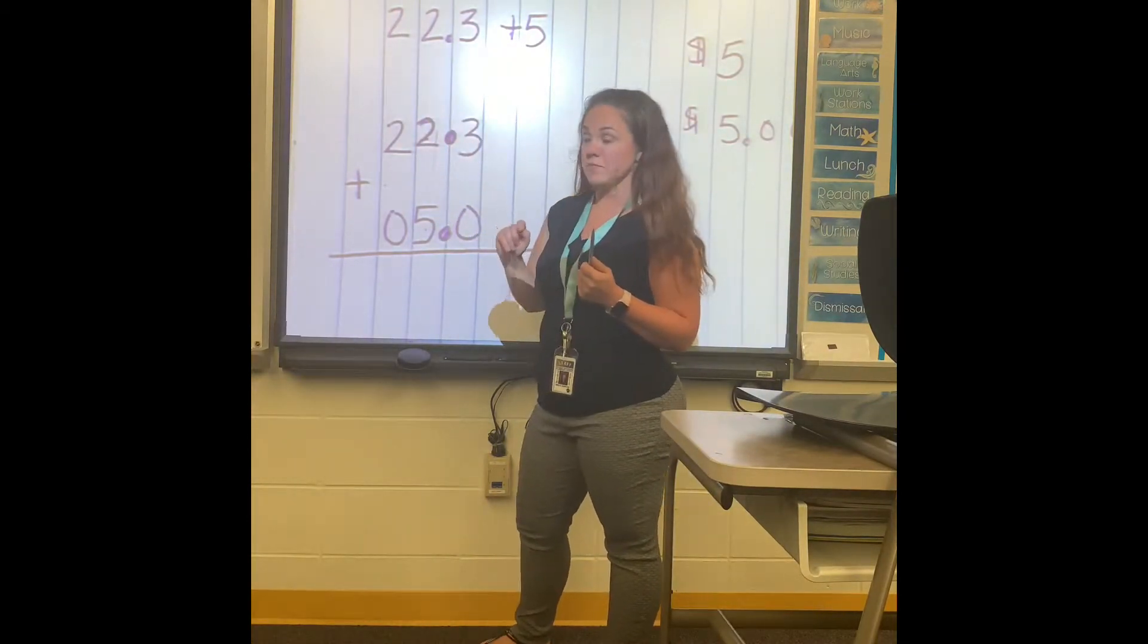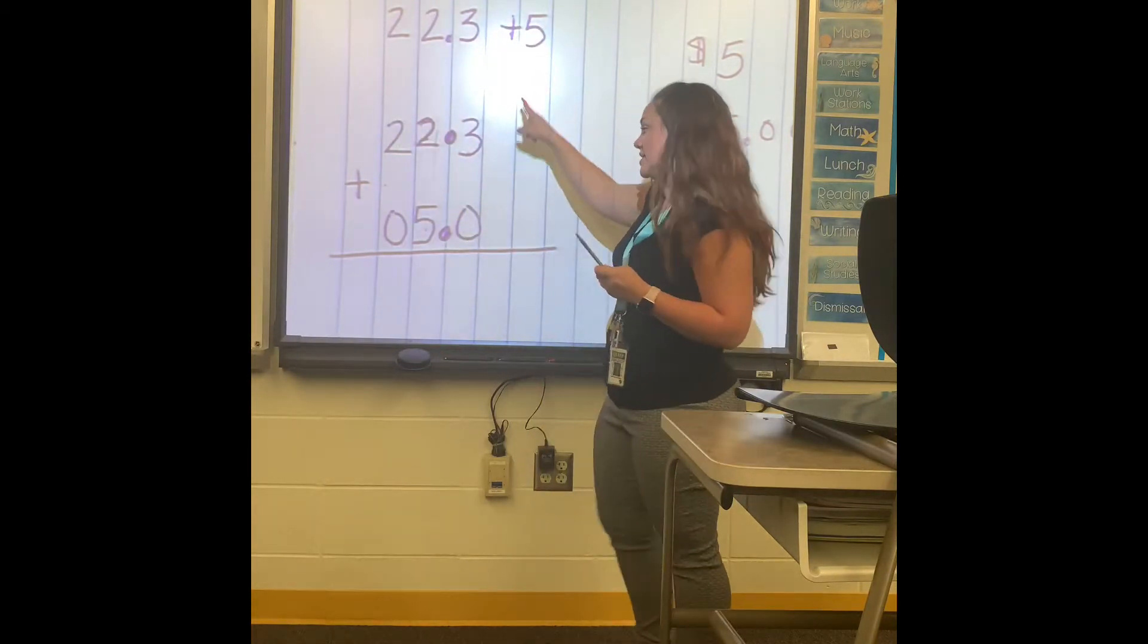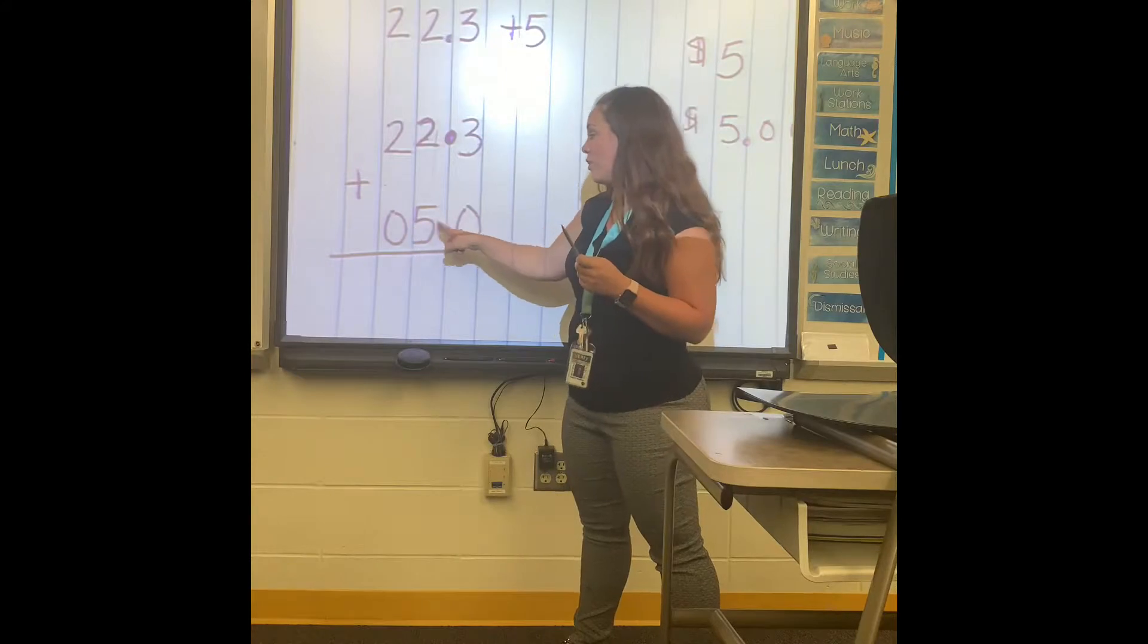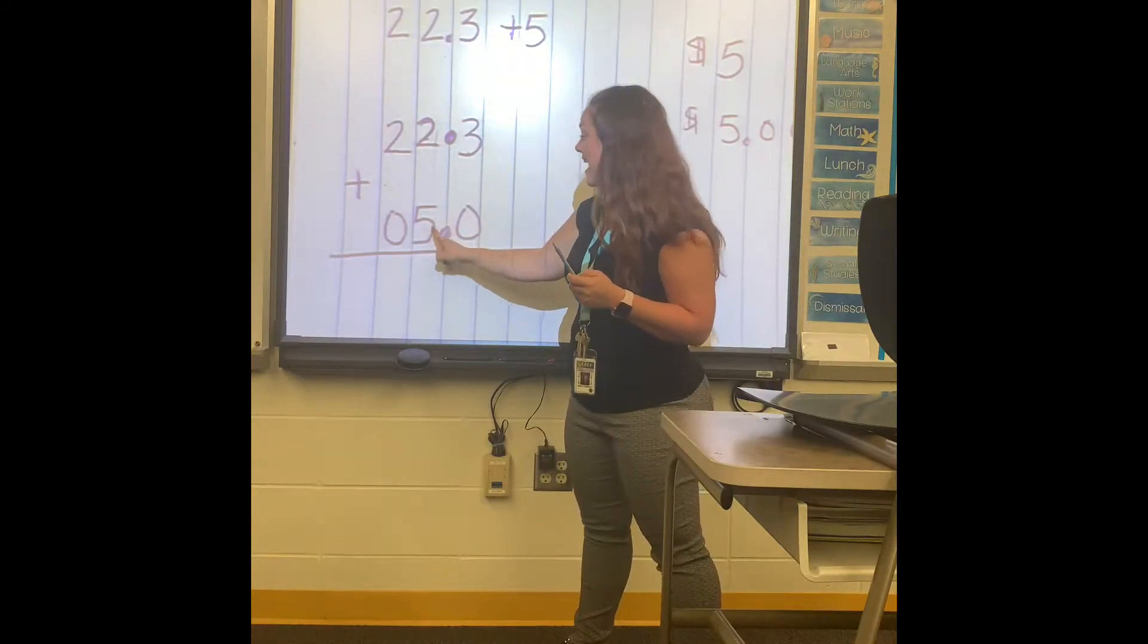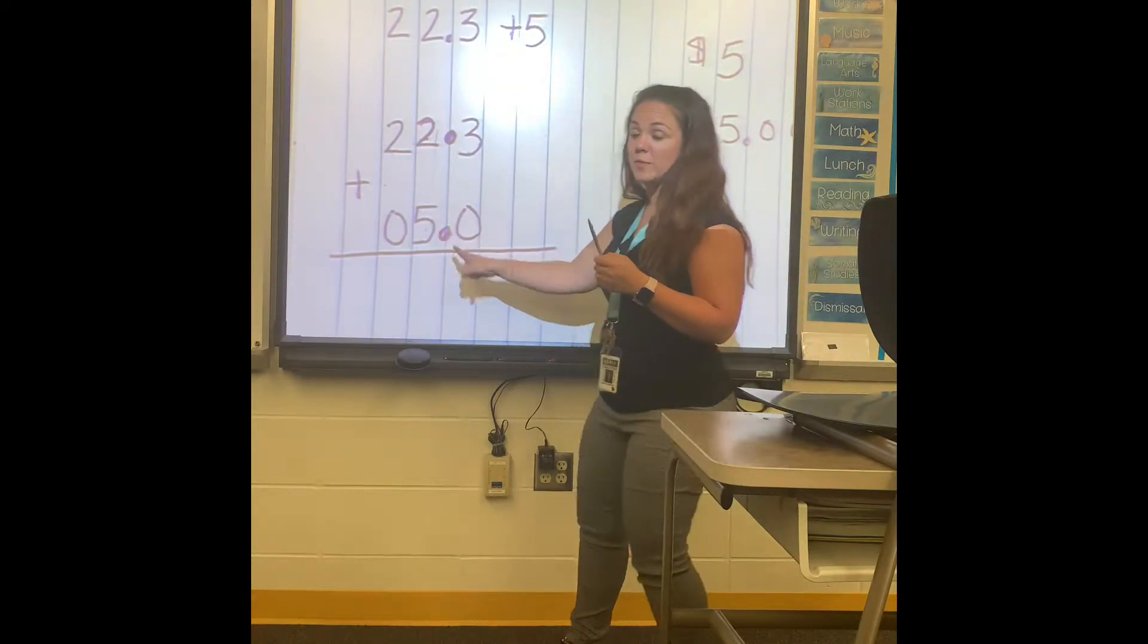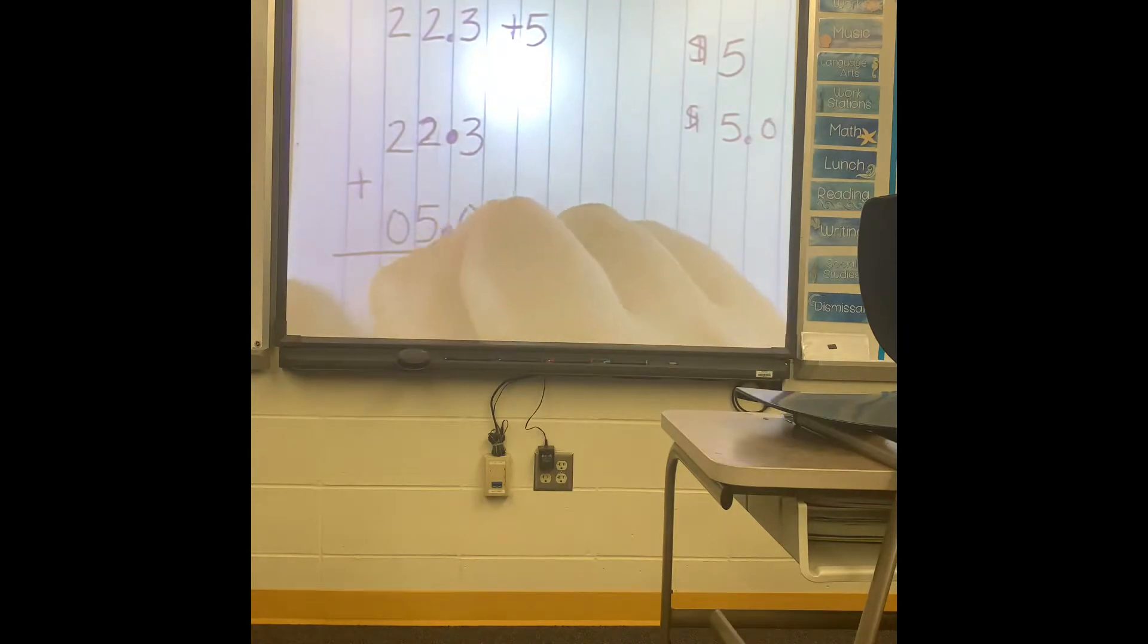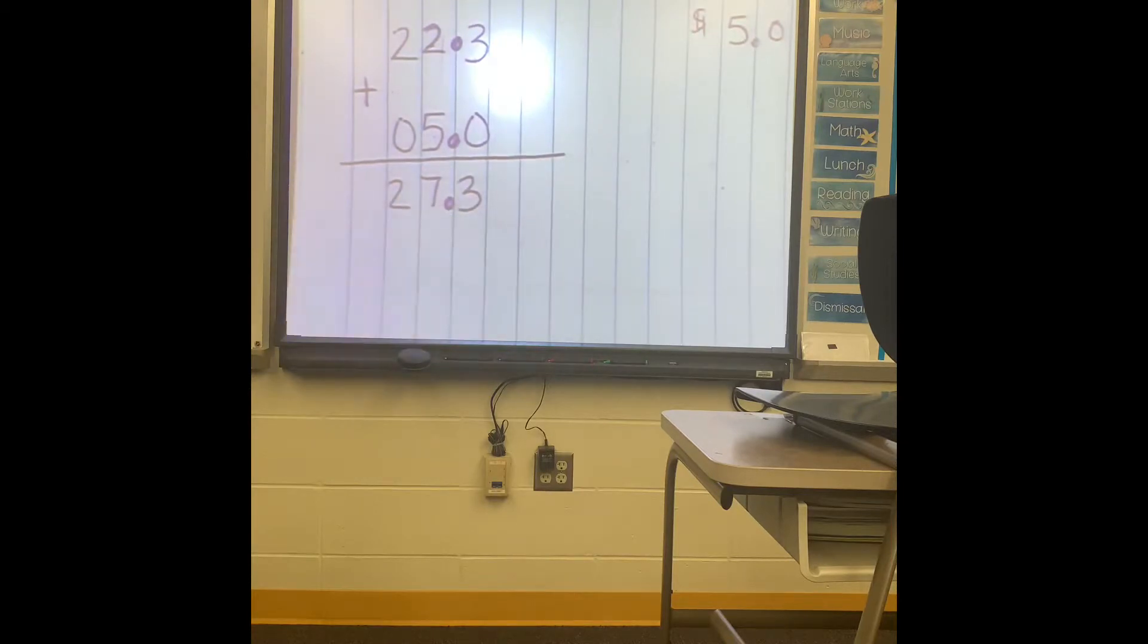Put your decimals down first, and then I just fill it in. 22.3. That I think most of the students can do. It's when there's no decimal that they forget and they kind of want to move that 5. No, it's 5 invisible decimal. Now you can add it up. So 3, 7, and 2. Bring down your decimal. Your answer is 27.3.